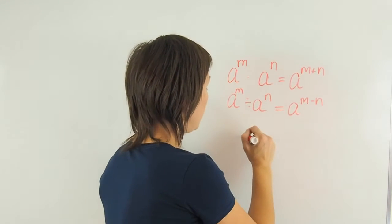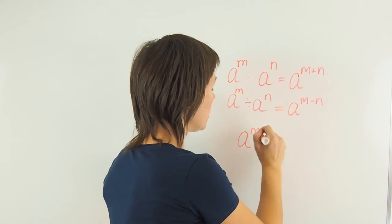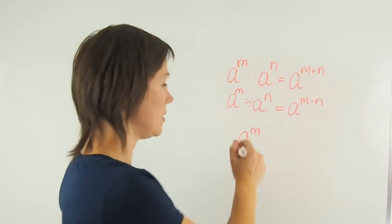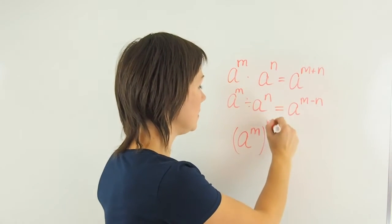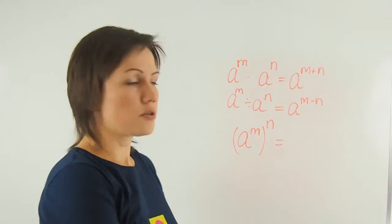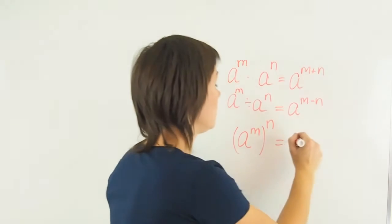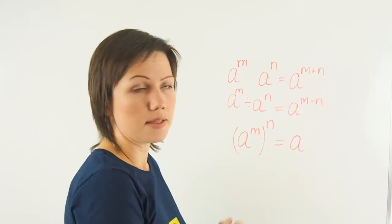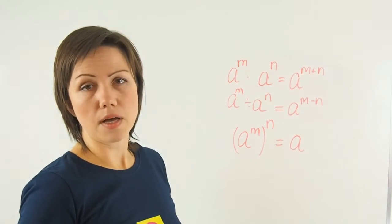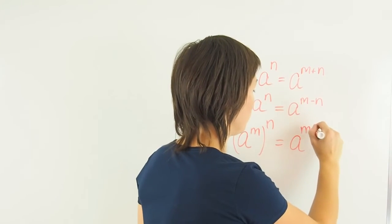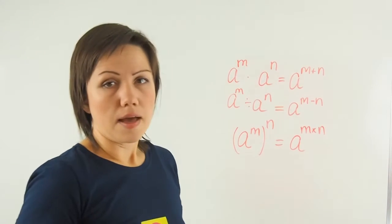Next, if I have a base raised to the exponent m, and then I'm raising it again to the exponent n, then this is called the power of a power rule or law. And I'll keep the base, and this time I'll multiply the exponent m times n.